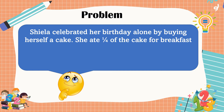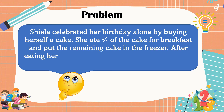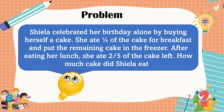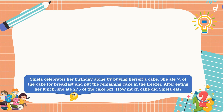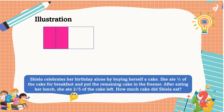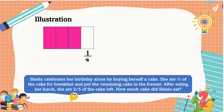This is our second problem. Shella celebrated her birthday alone by buying herself a cake. She ate one-fourth of the cake for breakfast and put the remaining cake in the freezer. After eating her lunch, she ate two-fifths of the cake left. How much cake did Shella eat? The second problem is a non-routine problem, so let's use an illustration to visualize how to solve it. This is the cake that Shella bought — she sliced it into four equal parts, then she ate one-fourth of it.